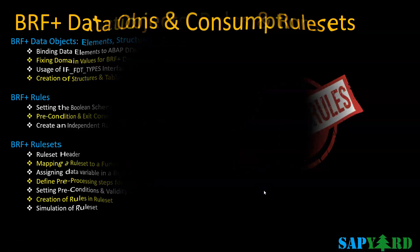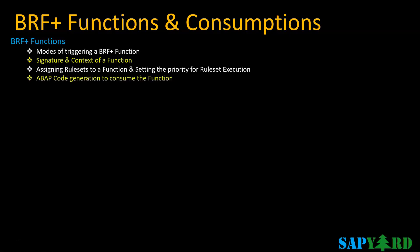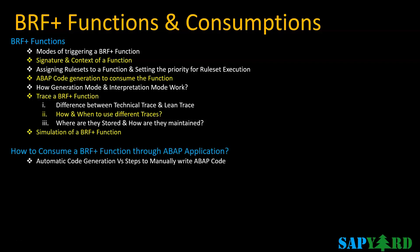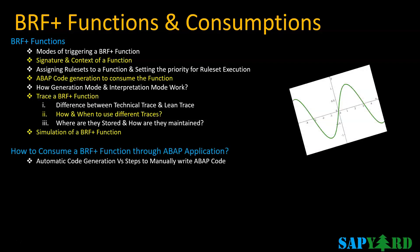Functions in BRF Plus are considered the connecting link between the code and the rules. A function defines inputs and outputs and thus acts as the contract between the caller and the business logic implemented with the rules. In short, functions define the purpose of what is to be done in the business rule. We will cover the modes of triggering BRF Plus functions, signature and context of a function, how to assign rule sets to functions, and how to generate the ABAP code to consume the function.